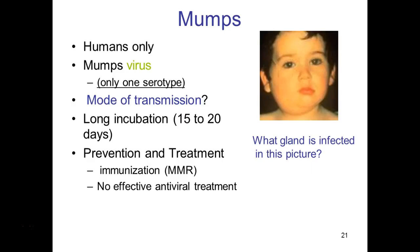Most people recover easily from mumps, and before vaccination it was very common — many older people are naturally immune from having it as children. The most commonly affected gland is the parotid salivary gland, causing the classic swelling visible on the side of the face. The virus can also spread throughout the body, and for some reason there are many receptors for this virus in the testicles as well.